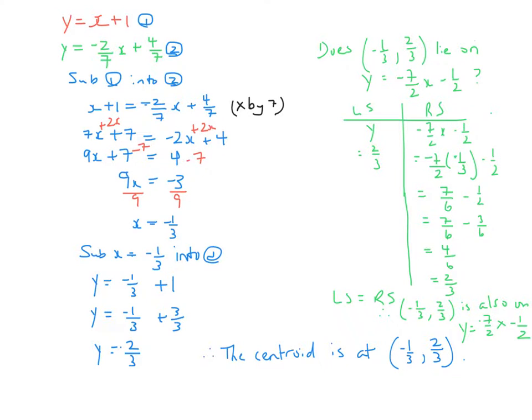Continuing on with the problem from page 11 on the centroid, I've taken equation one and equation number two, so that's this one here and this one from the front side, which are the medians from A to side BC and from B to side AC, and I solved the system using the substitution method.